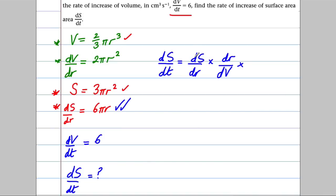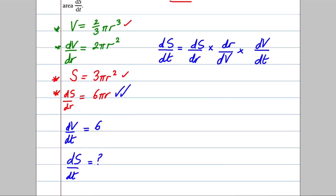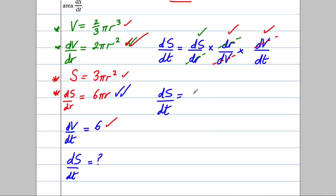That gives me ds/dv so far, but I want ds/dt. So I multiply by dv/dt: that dv cancels with that dv, leaving ds/dt. So ds/dt = ds/dr × dr/dv × dv/dt = 6πr × (1 over 2πr²) × 6.